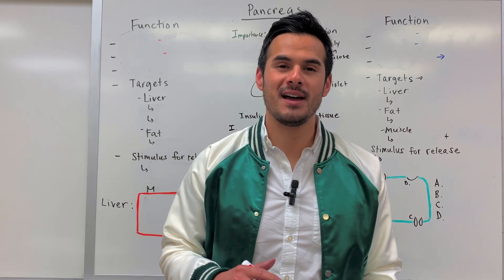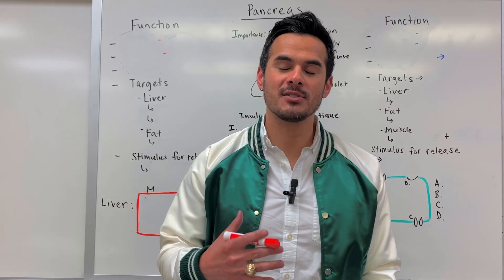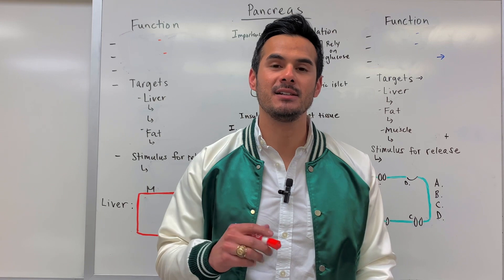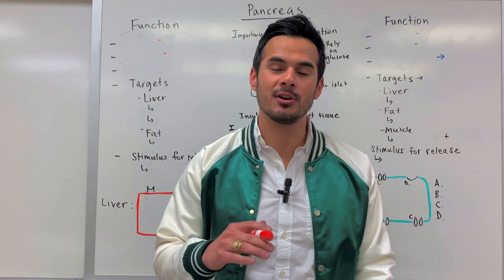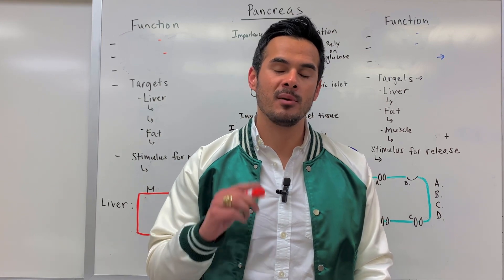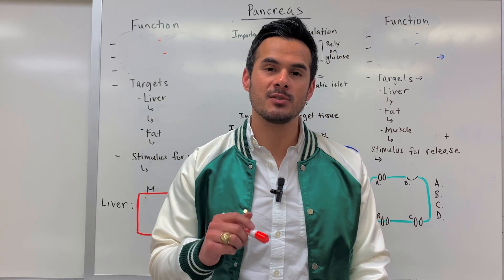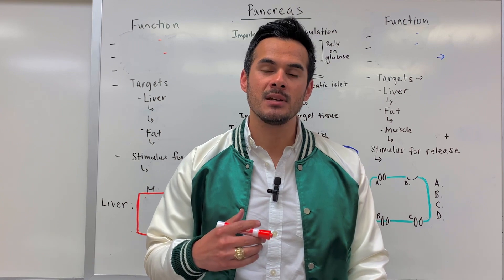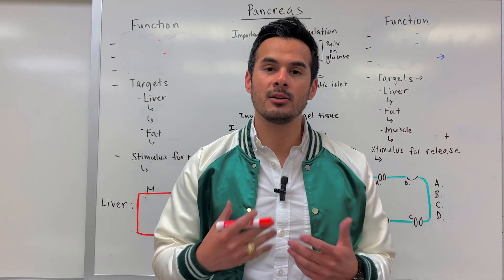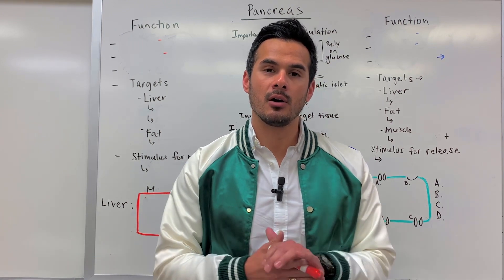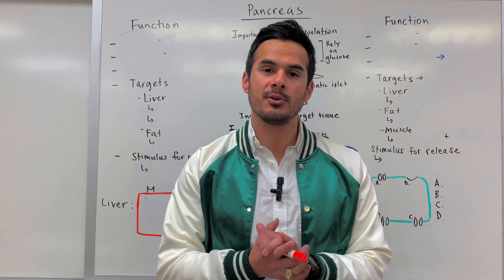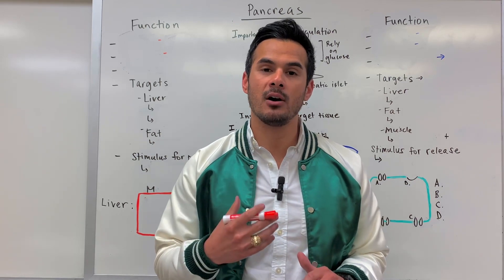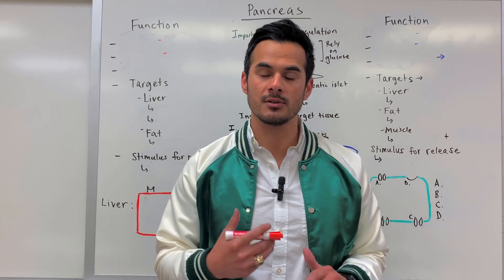Welcome back to Acosta's Anatomy. I'm Travis Ray and in this lecture we're going to discuss insulin and glucagon. Overall, insulin and glucagon are hormones secreted by the pancreas that are going to help to regulate our blood glucose levels.